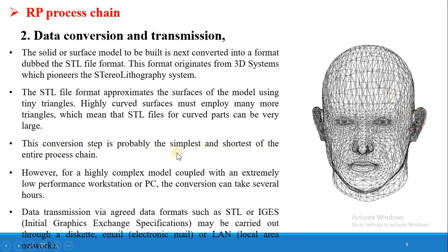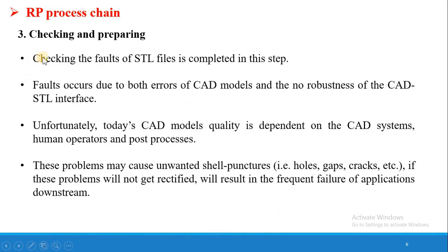This conversion step is probably the simplest and shortest process, as modern high-quality software can convert CAD files into STL files quickly. However, for a highly complex model on a low-performance workstation, conversion can take several hours if the computer lacks sufficient RAM or hard disk capacity. Data transmission via agreed formats such as STL or IGES may be carried out through disk, email, or LAN. Once the CAD file is converted to STL, it can be transmitted to different engineering departments via email, hard disk, pen drive, or local area network.